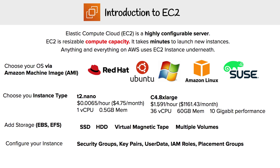You can have very large instances. Here is one server that costs $5 a month, and here you have one that's $1,000 a month. This one has 36 CPUs and 60 gigabytes of memory with 10 gigabyte network performance.